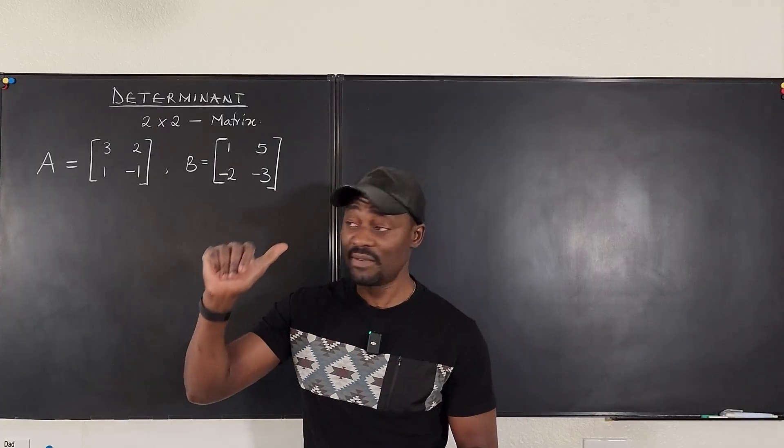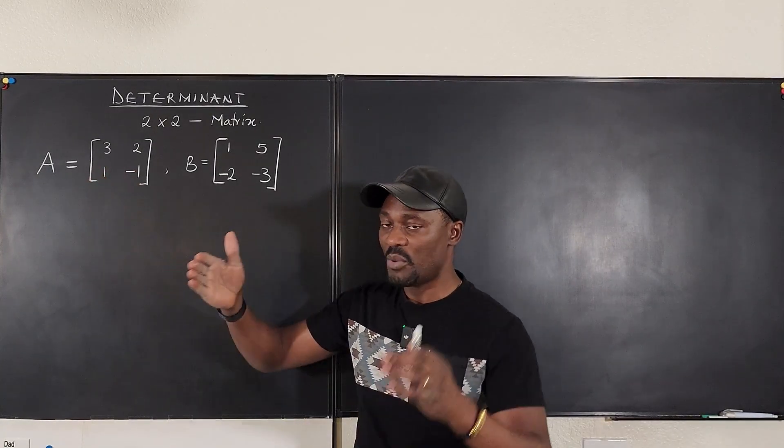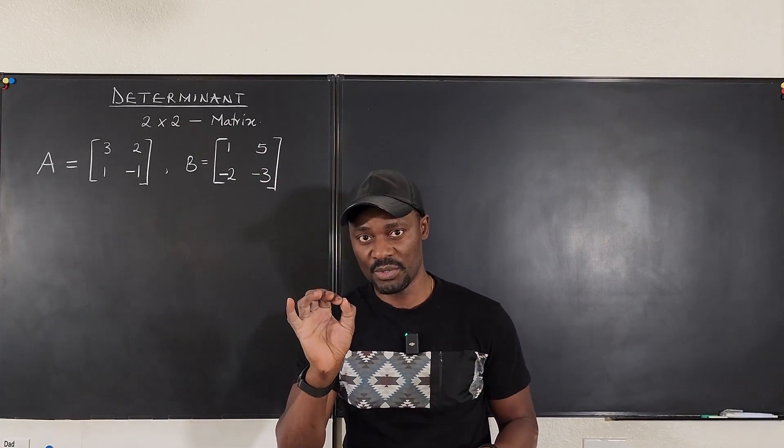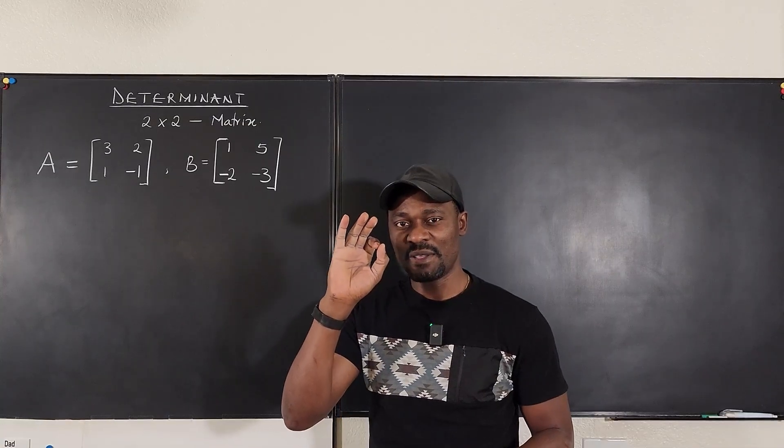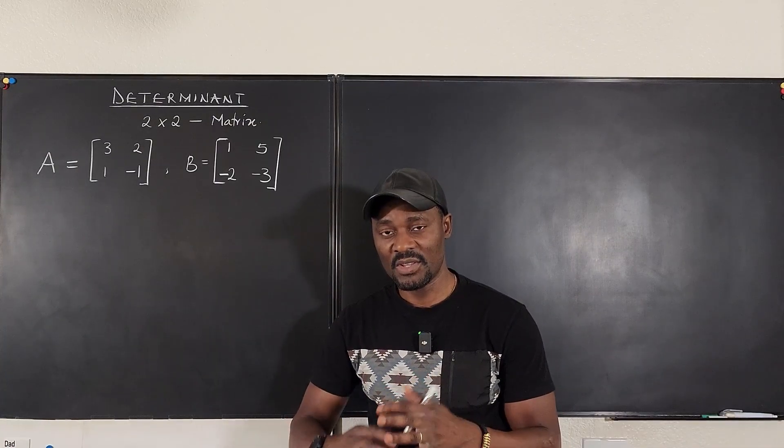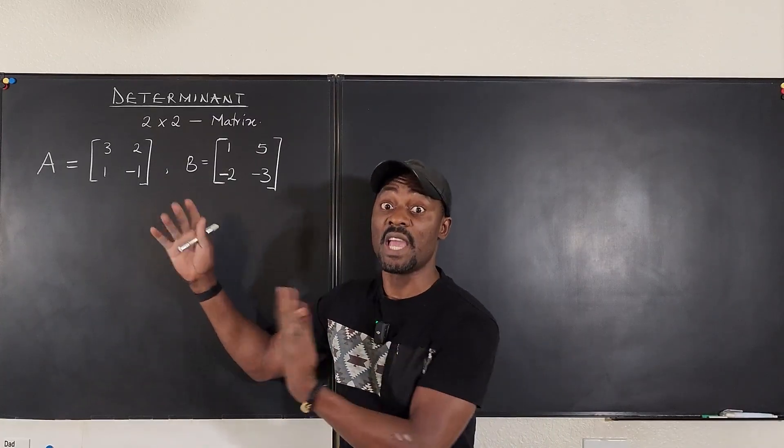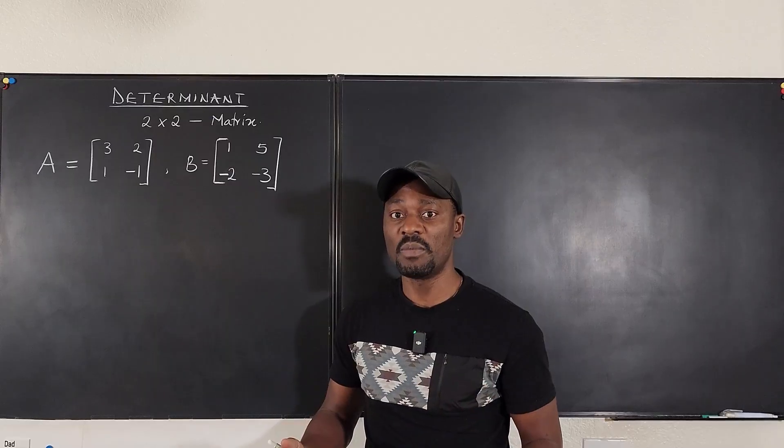I also explained in the previous video that when you write a matrix this way, this is a matrix. But when the bars on the side are straight up, you call them determinants and those are numbers. So let me tell you maybe four things in particular about determinants. The first thing is that the determinant of a matrix can be calculated only if the matrix is a square matrix.